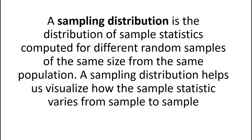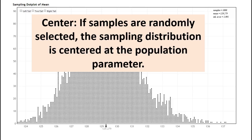What does the sampling distribution tell us about the behavior of statistics? The sampling distribution is the distribution of sample statistics computed for different random samples of the same size from the same population. A sampling distribution helps us visualize how the sample statistic varies from sample to sample. There are four properties you must know about the sampling distribution. Each of the data points used to create the plot is a statistic, calculated from a random sample of the same size taken from the same population.